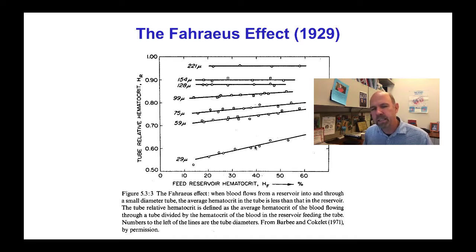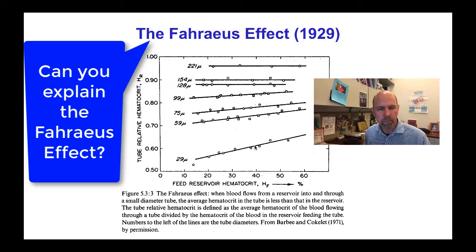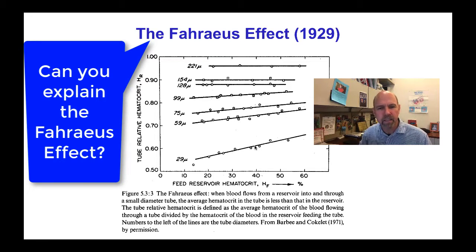But the real question is: what explains the Fåhræus effect? Can you think why the hematocrit in the thin tube would be less than the hematocrit in the reservoir that's supplying the tube? And in case you're thinking that perhaps all the red blood cells in the reservoir don't make it into the tube...